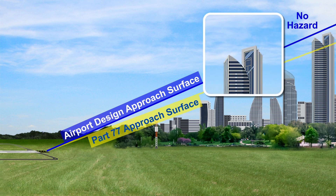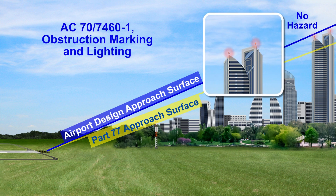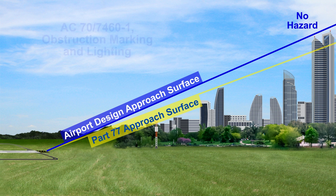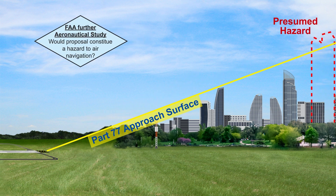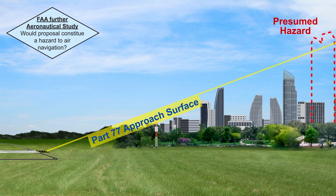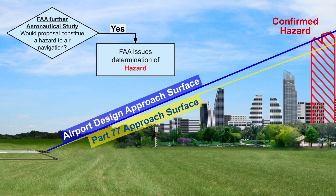Marking and lighting of the proposed structure may still be required. Advisory Circular 70-7460-1, Obstruction Marking and Lighting, describes the FAA's standards for marking and lighting obstructions. However, if the FAA's aeronautical study confirms the proposed structure poses a substantial aeronautical impact, the FAA issues a hazard determination to the proponent. See the Airport Airspace Case Study video in the Airport Design Technical video series for examples of impacts that these hazards may cause to an airport.